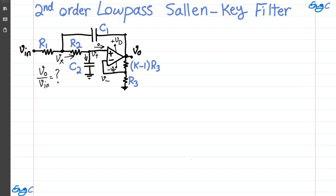A second-order low-pass Sallen-Key active filter designed with one op-amp is shown here. We want to analyze the circuit, understand intuitively why it is low-pass, and then find the transfer function.